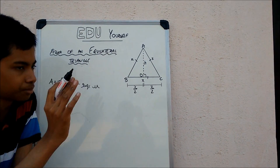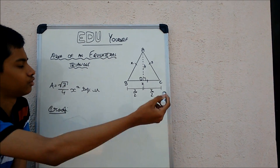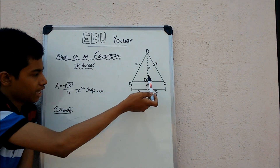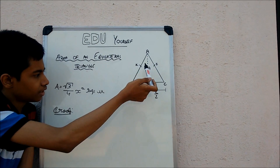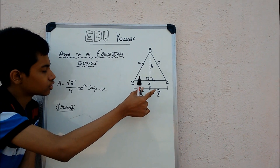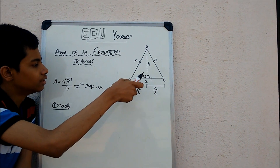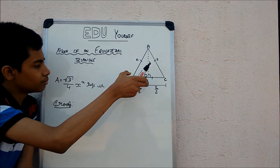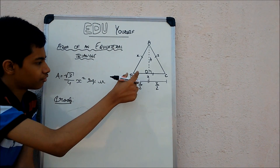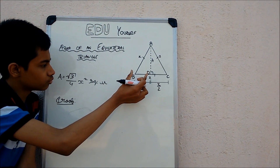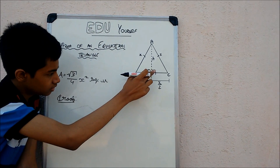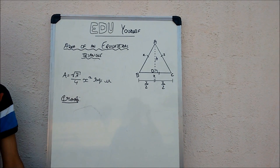So first let me show you something which I have done. I have erected an altitude AD and called it h. Now since it is an equilateral triangle, D is the midpoint of BC. Hence if BC is x, we know that BD is going to be x by 2 and DC is also going to be x by 2.